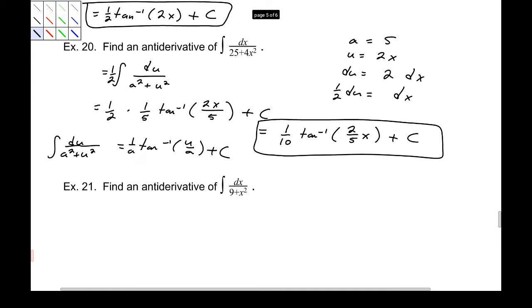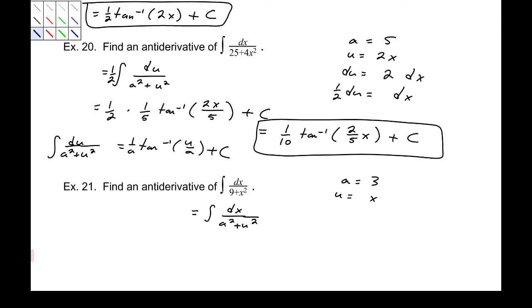Number 21: a is 3, u is x. We don't actually need to perform a u substitution here — this one is already in the form of dx over a squared plus u squared, which means this is arctangent. So arctangent, and it's 1 over a — so we'll have a 1/3 — times u over a, which is x over 3, plus c.